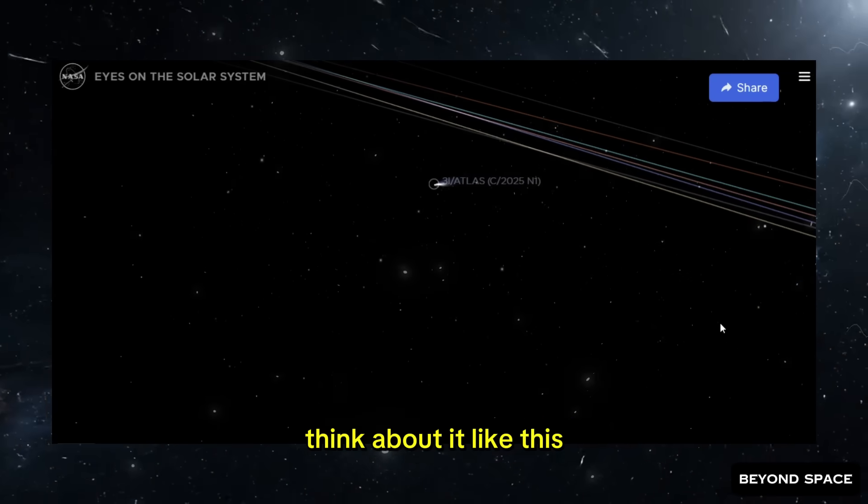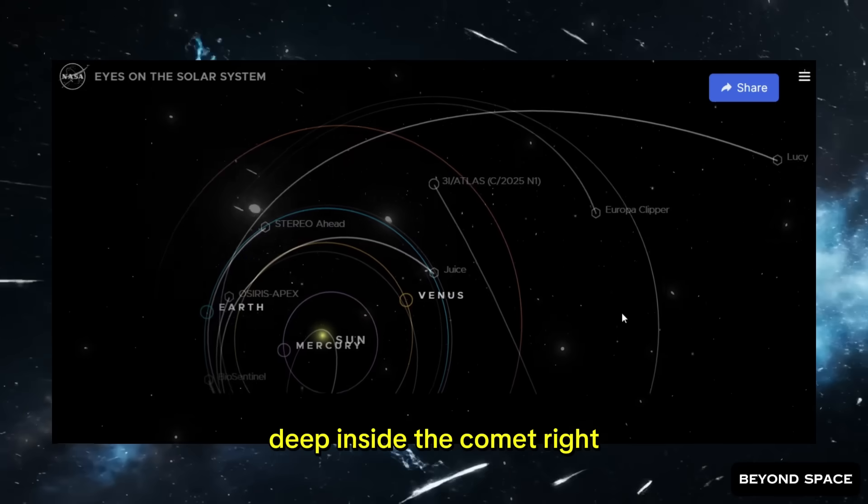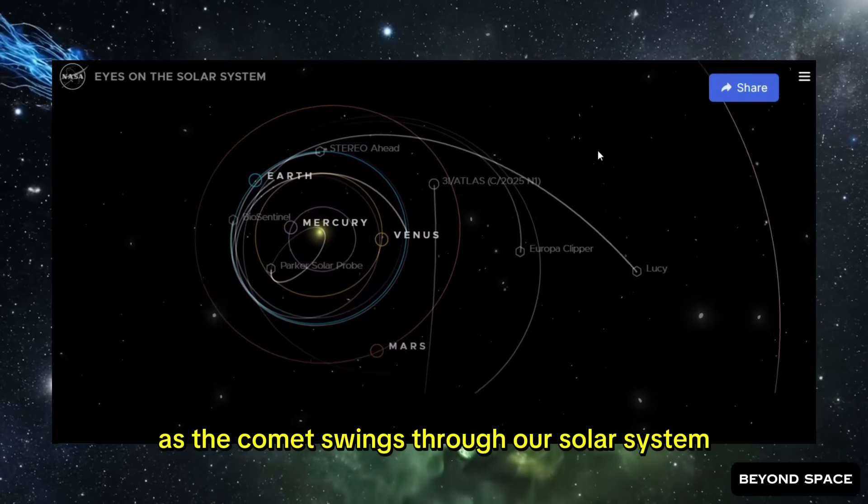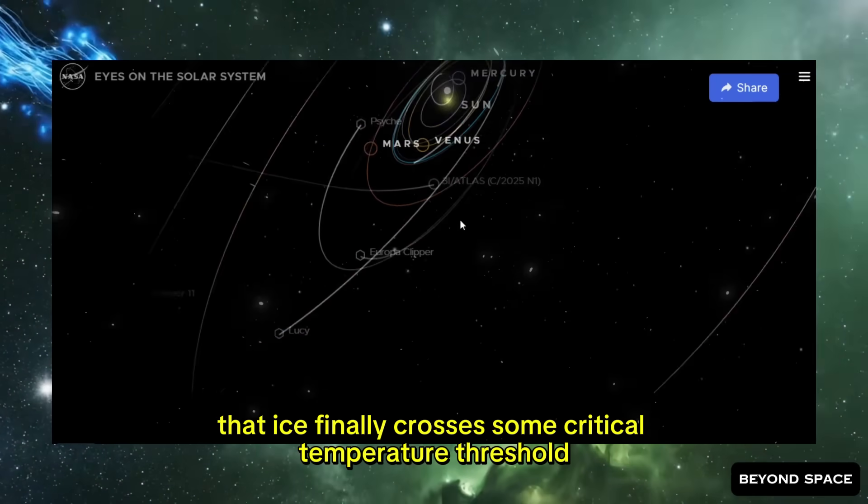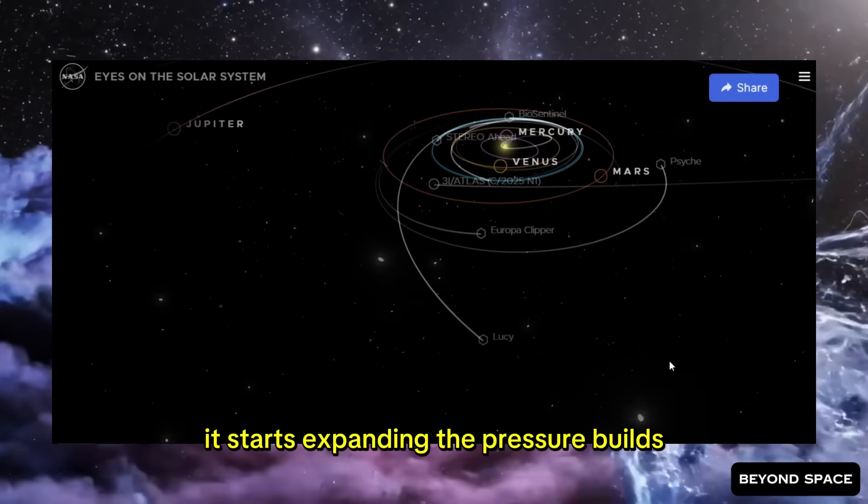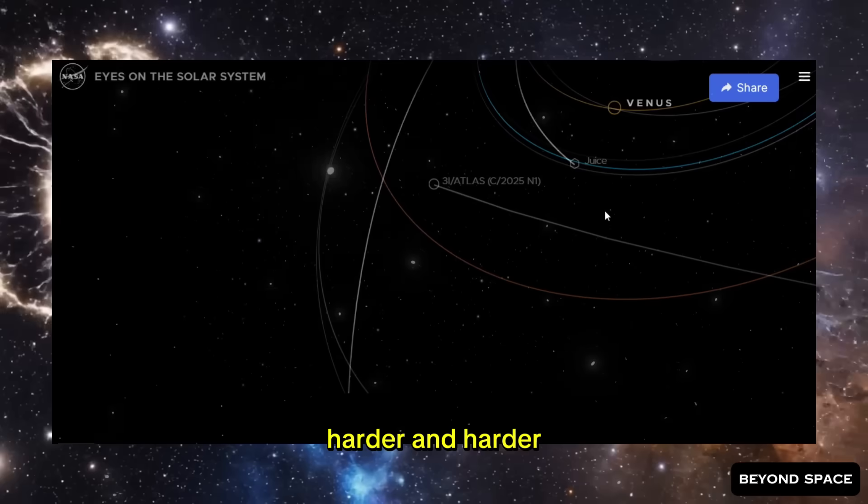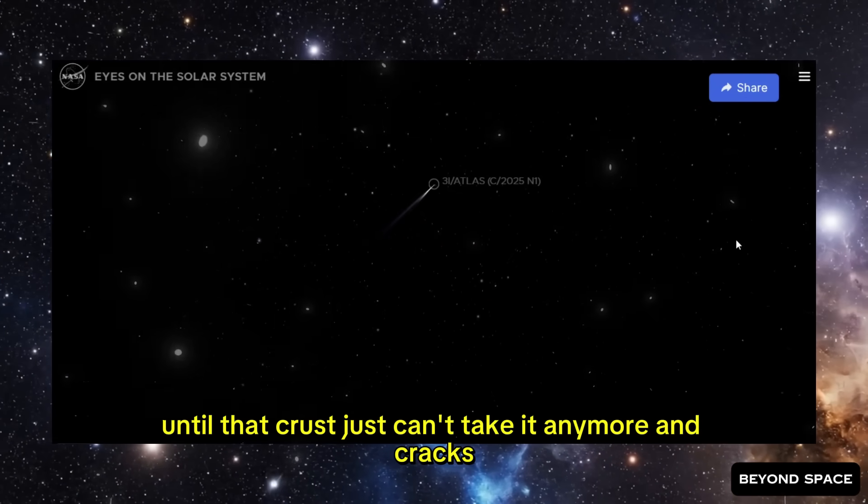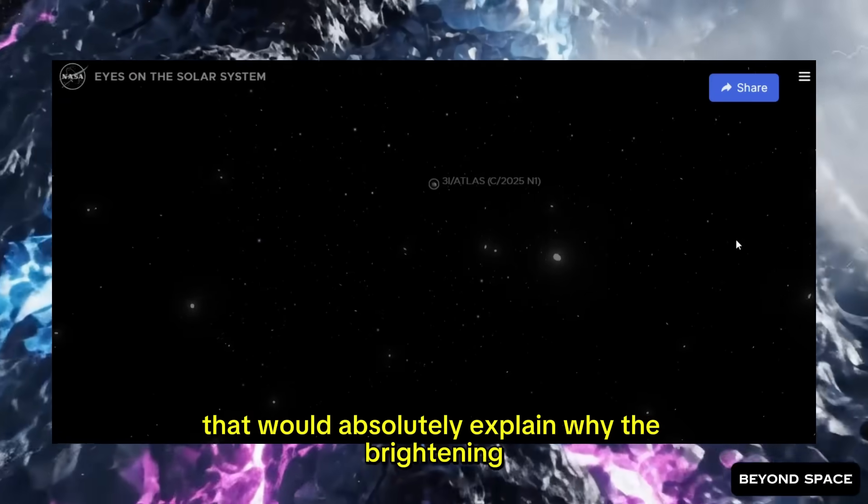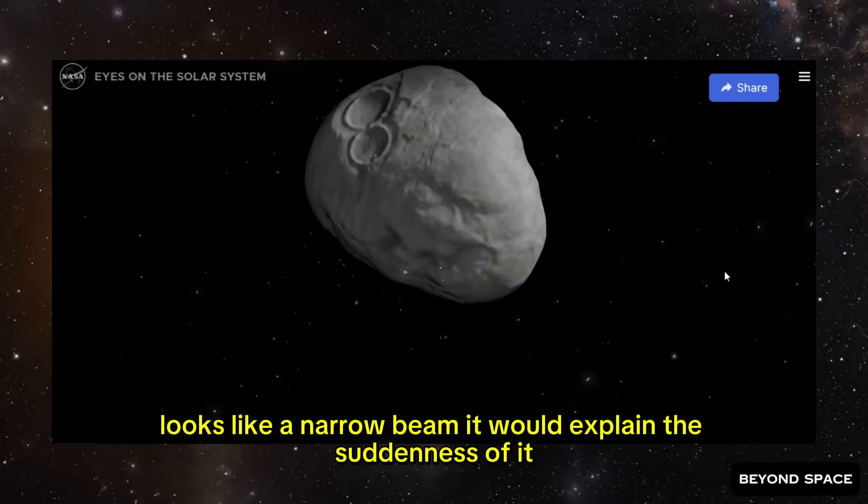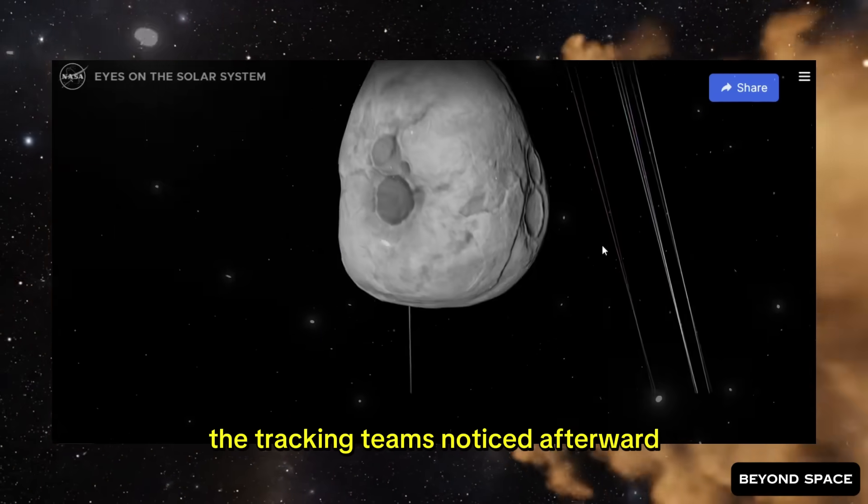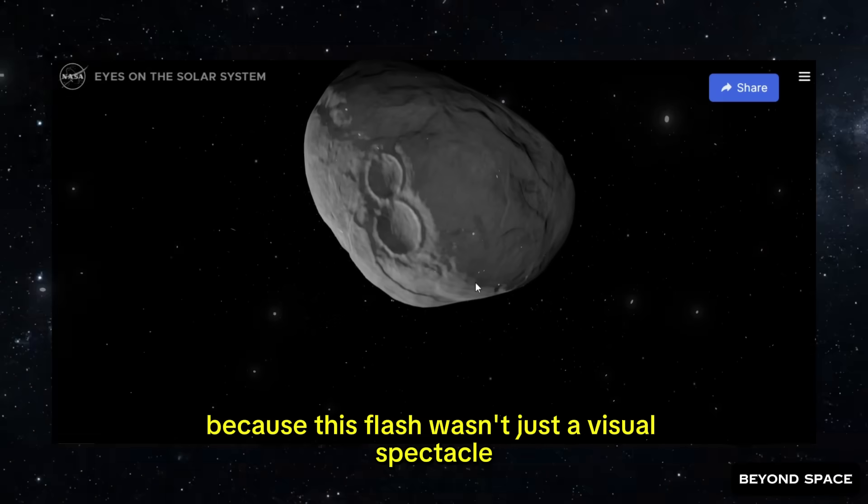Think about it like this. Imagine there's this ancient pocket of volatile ice deep inside the comet, right? It's been there for billions of years, just sitting dormant. And then, as the comet swings through our solar system, that ice finally crosses some critical temperature threshold. It starts expanding. The pressure builds. It's pushing against the crust above it, harder and harder, until that crust just can't take it anymore and cracks. And then whoosh! Everything erupts violently into space. That would absolutely explain why the brightening looks like a narrow beam. It would explain the suddenness of it. And it might even explain something else the tracking teams noticed afterward. Because this flash wasn't just a visual spectacle. It had physical consequences.